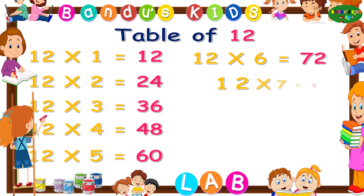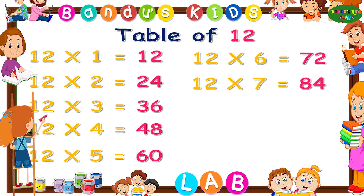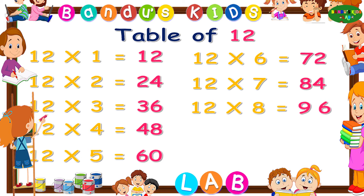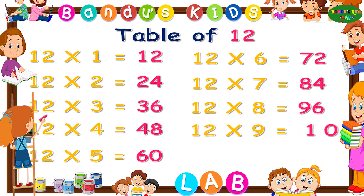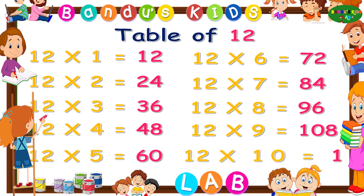12 sevens are 84. 12 eights are 96. 12 nines are 108. 12 tens are 120.